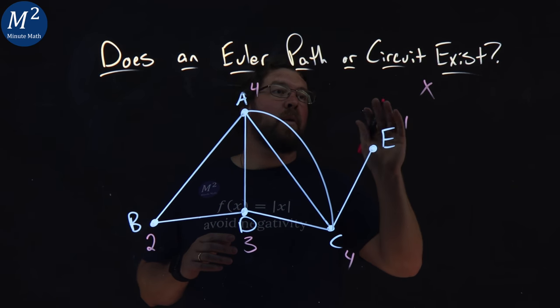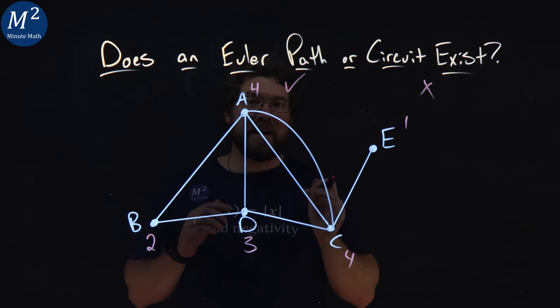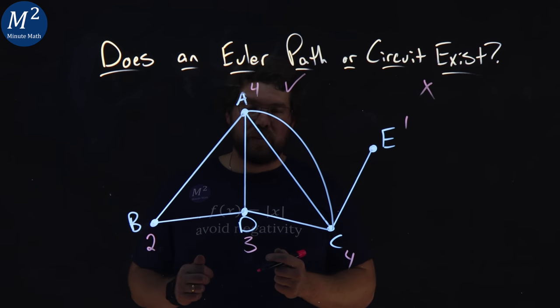So we would say, no, an Euler circuit doesn't exist, but yes, an Euler path does exist here from our Euler theorems.